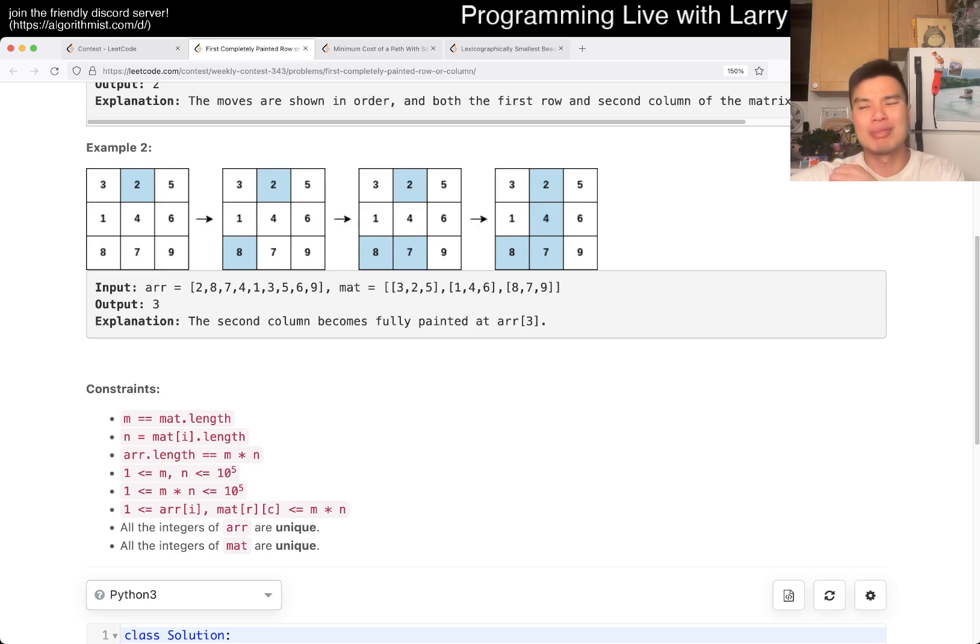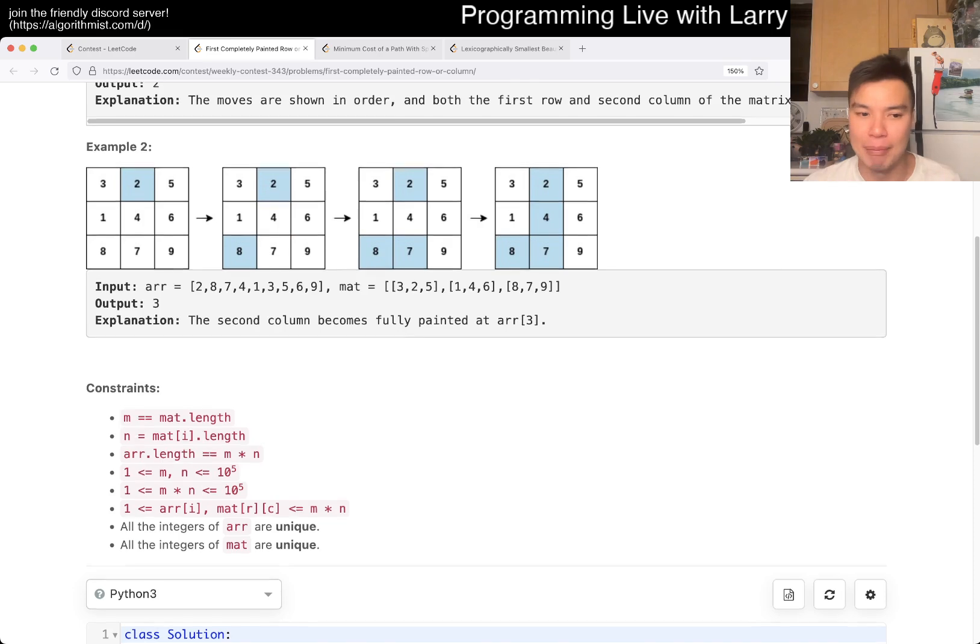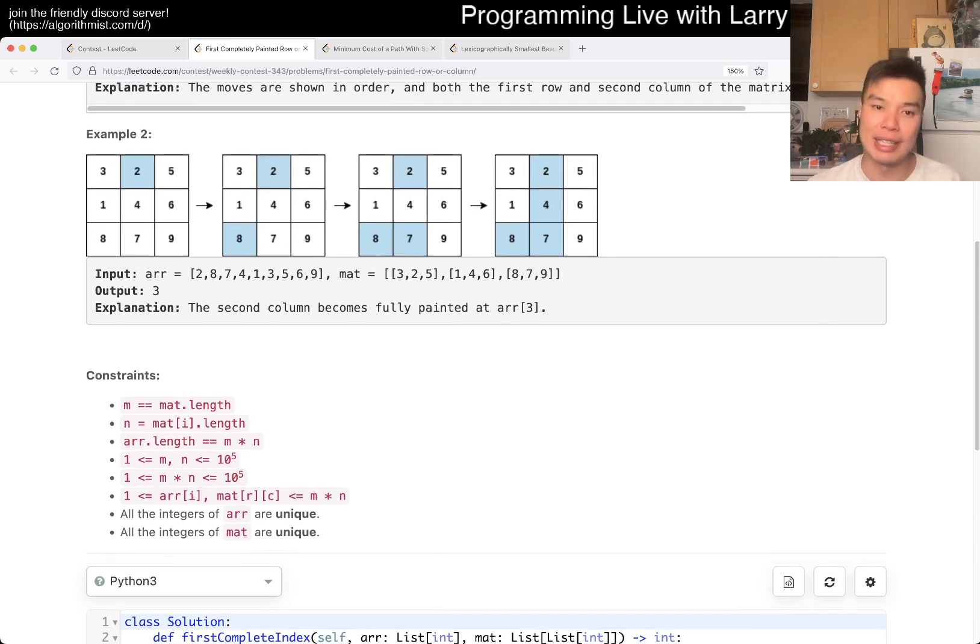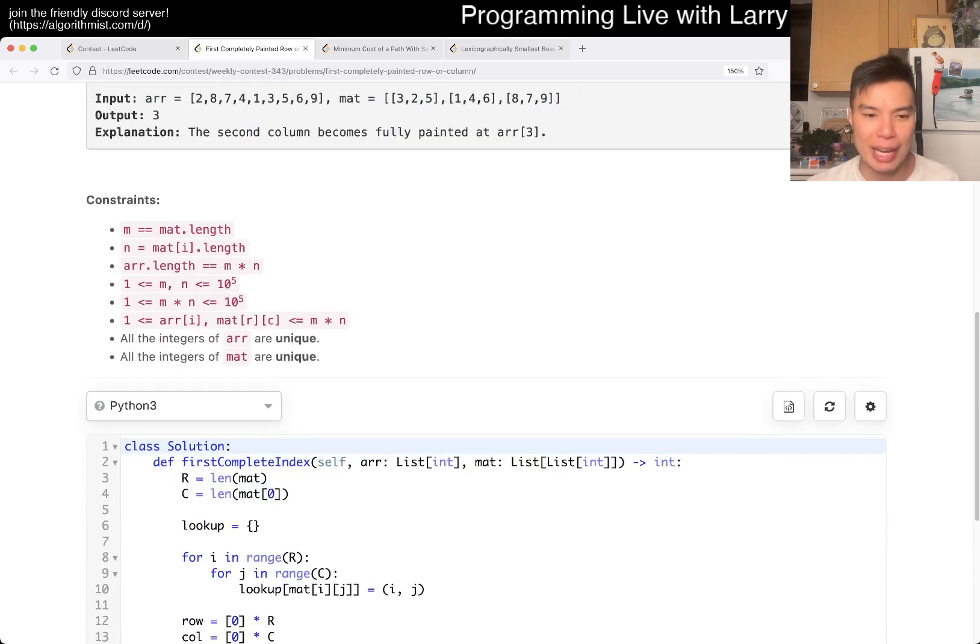If you, for example, in the other contest recently, the constraints were like 50, right? So you could have done an extra 4 loop or something like that and it's fine, but here, if you're not careful, you would get a timeout. So you definitely need to be careful about the constraints. But otherwise, the numbers are or the technique is still the same.